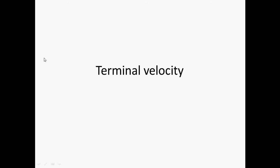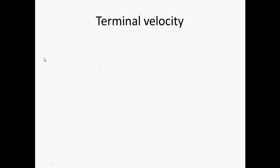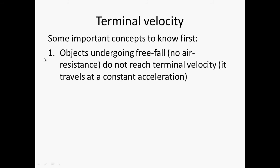This video explains terminal velocity. First, objects that undergo free fall — meaning there is no air resistance whatsoever — will not reach terminal velocity. This kind of situation will not have terminal velocity, and the object travels at a constant acceleration forever. So this is something that you do not consider terminal velocity.